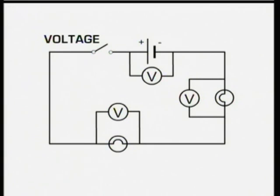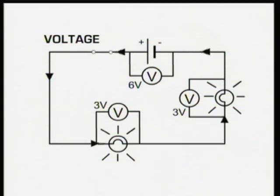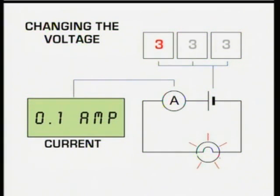To measure the voltage, you connect the voltmeter in parallel with the component. In this case, the voltage across the battery is 6 volts, while the voltage across each lamp is 3 volts. More battery cells in the same circuit mean a higher voltage and a bigger current. In this circuit, if the battery produces 3 volts, the current is 0.1 amps; if it's 6 volts, it's 0.2 amps; and if it's 9 volts, it's 0.3 amps.